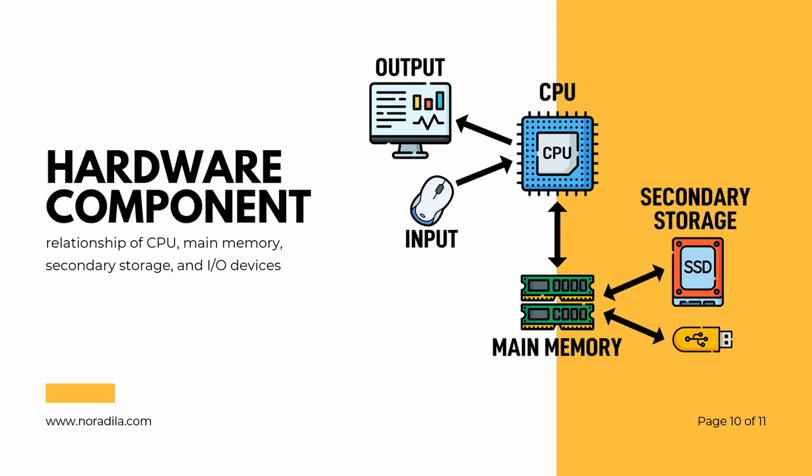Secondary memory devices such as hard disk, floppy disk, USB drives, writable CDs, and writable DVDs provide long-term storage. As the main memory is for temporary storage, information is moved between the main memory and secondary memory as needed. Input/output devices such as monitor screen, keyboard, joystick, barcode scanner, and touch screen facilitate user interaction on the computer system.